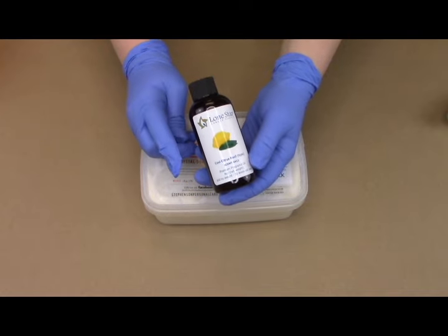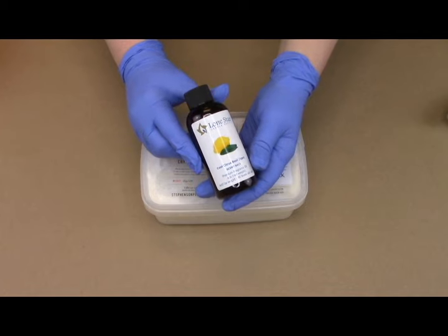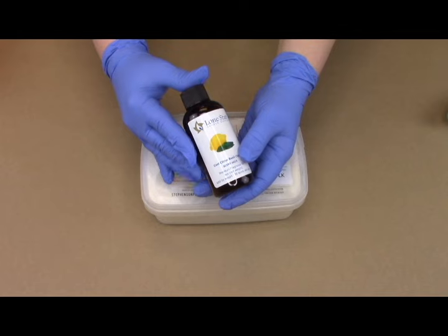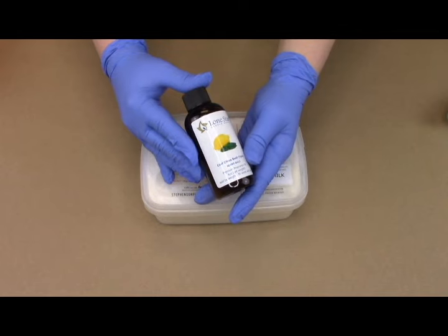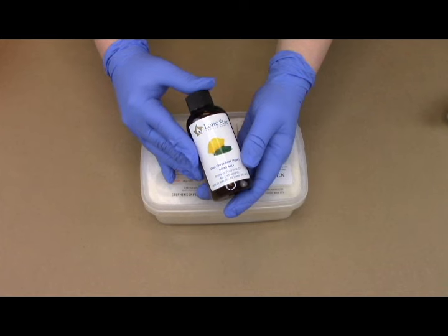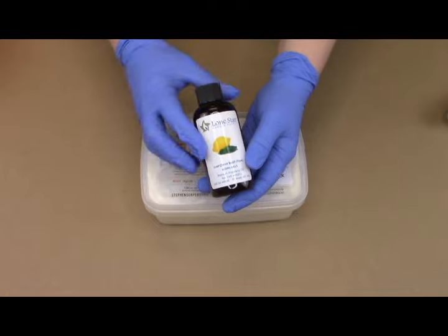You're going to want to choose a fragrance that has a low vanillin content. Anything that has vanillin or a lot of vanillin in it can actually turn your soaps kind of a brown color unless you use some sort of a color stabilizer. We're not going to use any of that today, so I've chosen a fragrance that does not contain any vanillin.